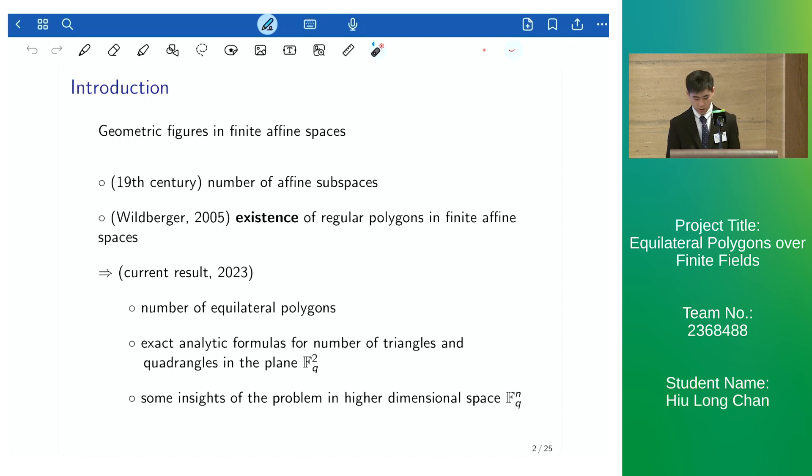In this current result, we present the approximate number of equilateral polygons as well as derive exact analytic formulas for the number of triangles and quadrangles in the plane. We also provide some insights of the problem in higher dimensional spaces.